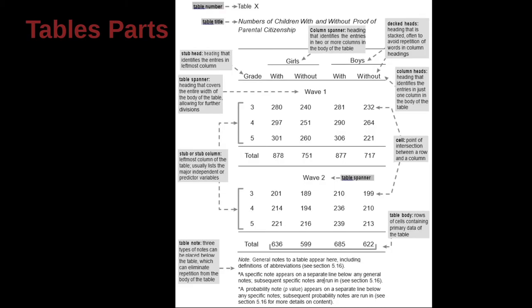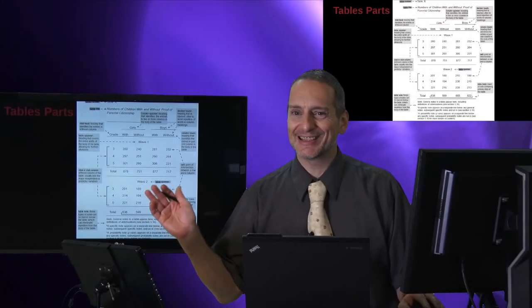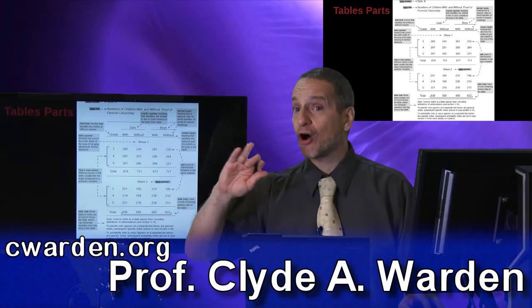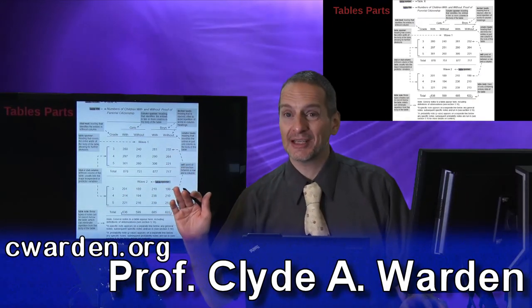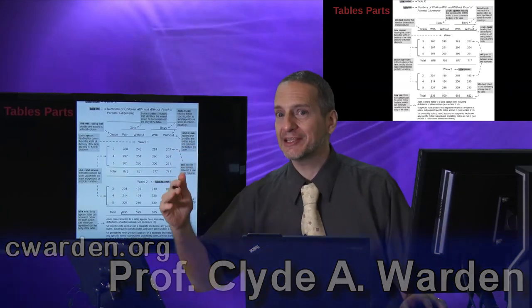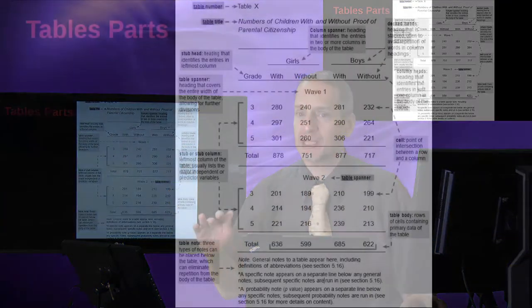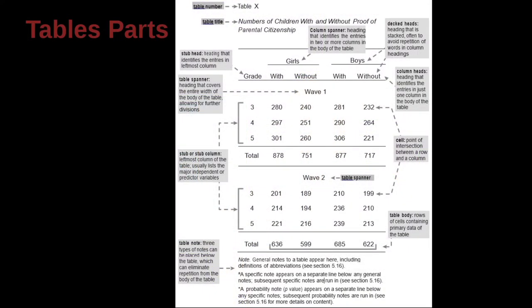Let's jump into the parts of a table. Now here we have the APA guidelines for what a table looks like, and all I can say is this has got to be the most complicated table I've seen because it includes all the possibilities of what you can do in a table. I'm sure there's more combinations, but here are the basic pieces to a table. So look at it with me over here. What we have is the table number up top here, table X, and then we have the table title. So the title of the table.